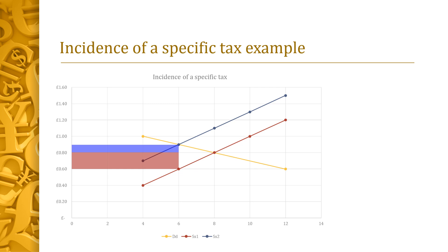After the tax is imposed, we see a left shift of supply. This leads to a new equilibrium price of 90 pence and a new equilibrium quantity demanded and supplied of 60,000 units. Although the total tax was 30 pence, we can see that the price has only risen by 10 pence — this is the consumer tax burden. Therefore, the producer tax burden is the remaining 20 pence.